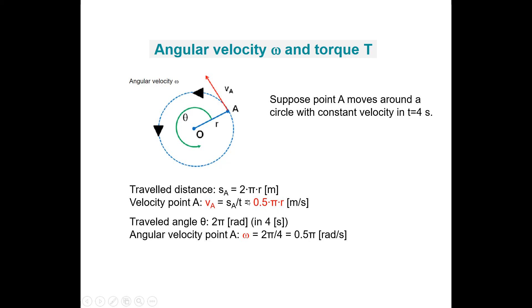We can also say that the traveled angle is equal to 2π radians. The travel time was 4 seconds, so the angular velocity omega is 2π divided by 4, which is 0.5π radians per second. So now we can say that v equals 0.5πr meters per second, which equals omega times r — so v is equal to omega times r.